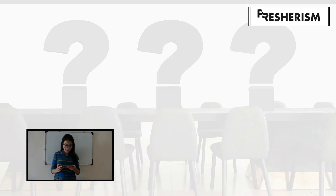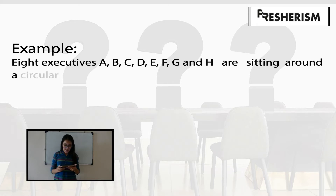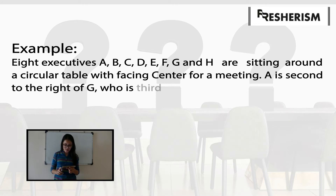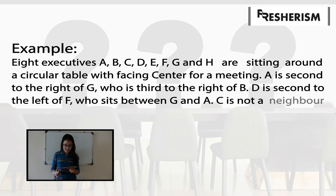Let us now take two more examples for our practice. The first example says that eight executors A, B, C, D, E, F, G and H are sitting around a circular table facing the center for a meeting. A is second to the right of G, who is third to the right of B. D is second to the left of F, who sits between G and A. C is not a neighbor of B or E.